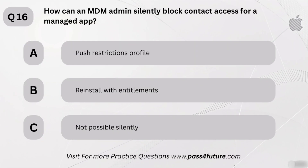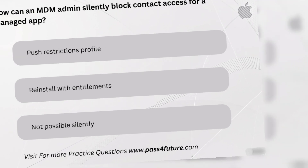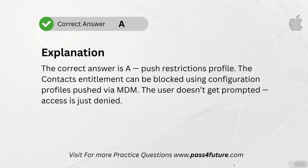How can an MDM admin silently block contact access for a managed app? A. Push restrictions profile. B. Reinstall with entitlements. C. Not possible silently. The correct answer is A — push restrictions profile. The contacts entitlement can be blocked using configuration profiles pushed via MDM. The user doesn't get prompted — access is just denied.